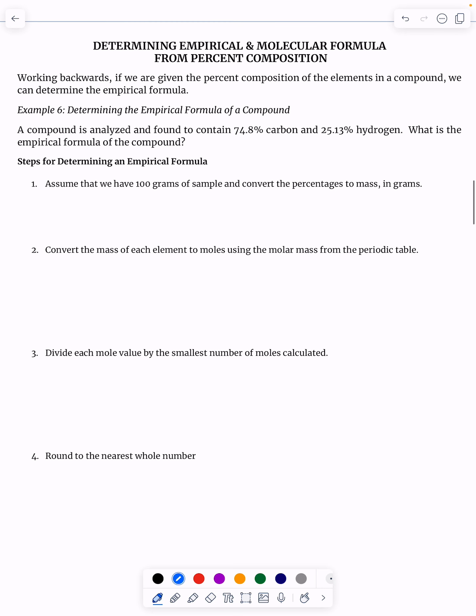There are four steps that you're not going to have to memorize, you'll always be given, but know for quiz and final. On the final exam, you will have to do a question like this, and I will give you these steps. So let's say a compound was analyzed and found to contain 74.8% carbon and 25.13% hydrogen. What is the empirical formula? These are the four steps that we're going to do with these percentages.